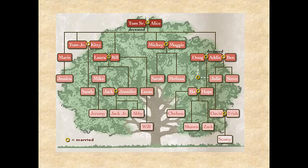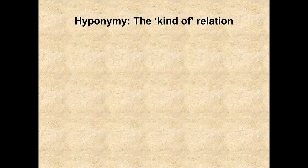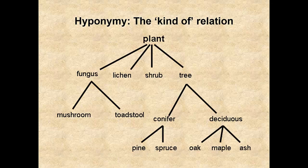We can even see this sort of structure in our family trees. But in all cases, we can summarize the structure as showing that each entity, except for the top level, is subordinate to one other entity. Hyponymy is the kind-of relation. In this diagram, we can see that fungus, lichen, shrubs, and trees are all kinds of plants — they're all hyponyms of the category 'plant.' The hierarchical relationship can be extended as far as you like. Remember, you must have more than one hyponym for any category; otherwise, the hyponym and the category are identical.